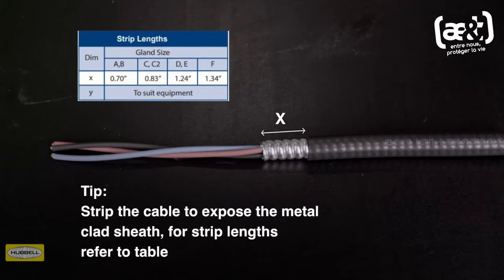Remove a further 0.7 inches of metal clad sheath for cable glands A to B size, 0.83 inches for C to C2 size, 1.24 inches for D to E size, and 1.34 inches for F size.